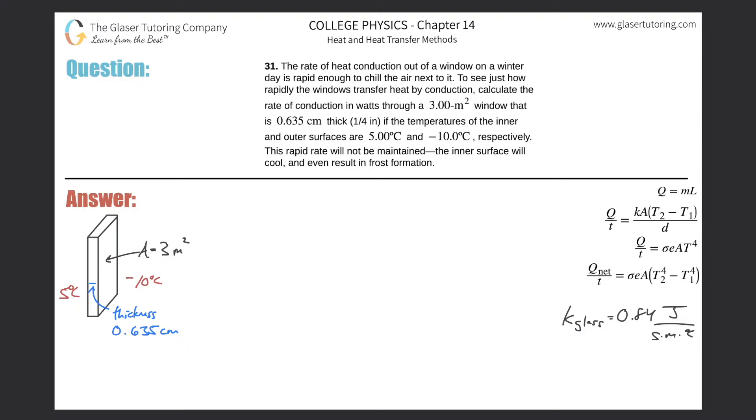Number 31. The rate of heat conduction out of a window on a winter day is rapid enough to chill the air next to it. To see just how rapidly the windows transfer heat by conduction, calculate the rate of conduction in watts through a three meter square window that is 0.635 centimeters thick if the temperatures of the inner and outer surfaces are five and negative 10 degrees Celsius respectively.